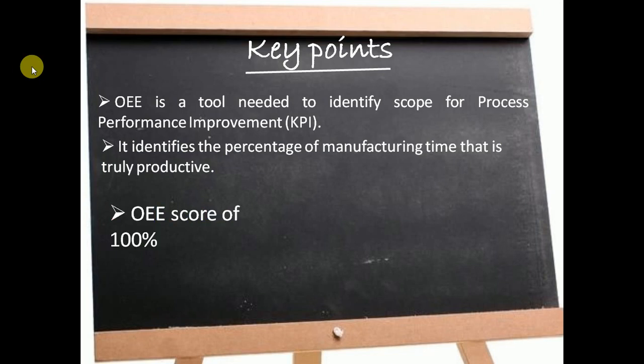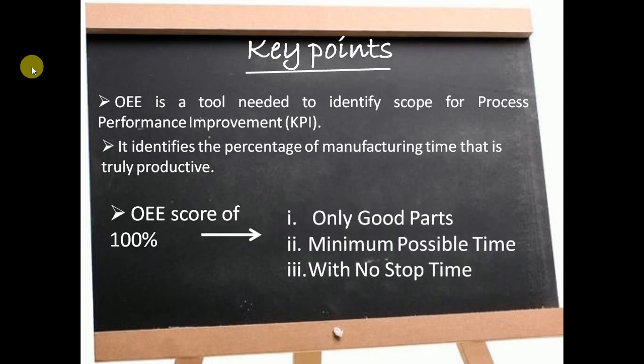For example, OEE of an industry is 100%, which means the industry is producing products in one pass with zero rework and zero rejection, which is the ideal case. Second point, in least amount of time without any speed loss, which is also the ideal case.